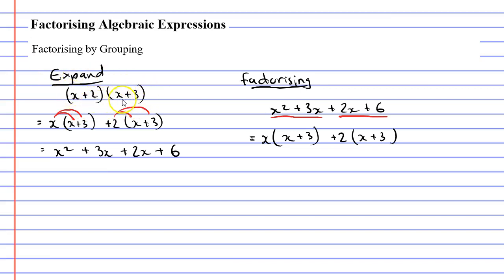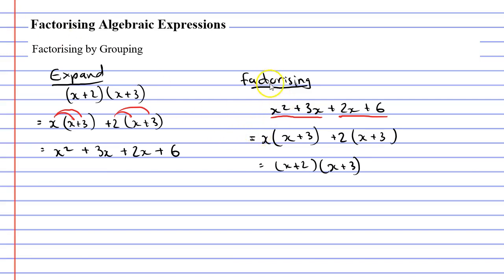You might have noticed when we expanded, we took one set of brackets and wrote it down twice, then took the other set of brackets and separated the two terms. So all we need to do is this but in reverse. This time we take our two sets of brackets and write them down once — x plus three — then take our two terms, x and plus two, and put them back into one set of brackets. When you factorize this expression, you do the exact same thing as expanding but in reverse. And that's what you do when you factorize by grouping.